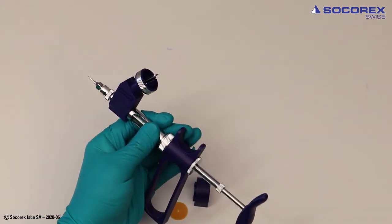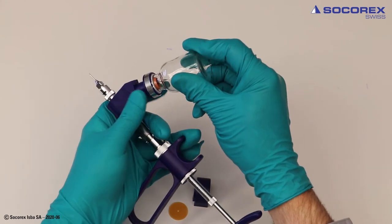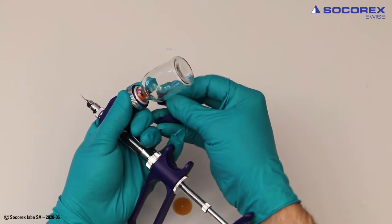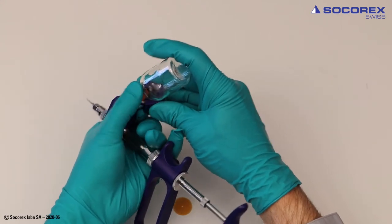Pierce bottle septum with aspiration needle while installing bottle. Clip lock ring to secure the system.